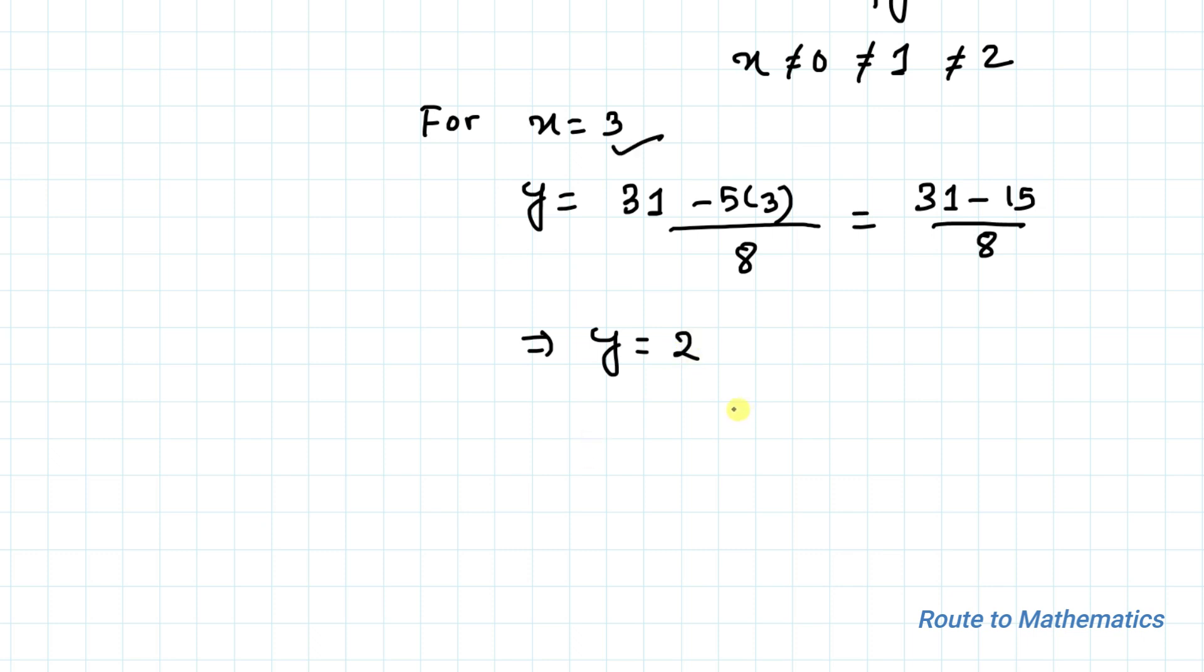Both the values of x and y satisfy all the given conditions. So what are we asked to find? We are asked to find the value of x + y. We have x = 3 and y = 2, which equals 5. This is our answer.